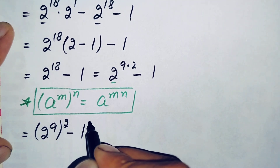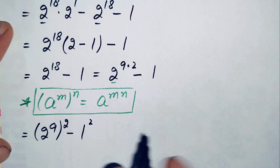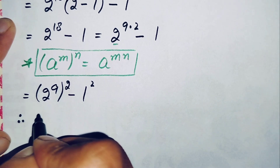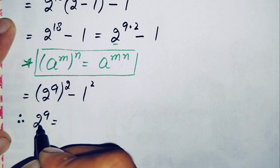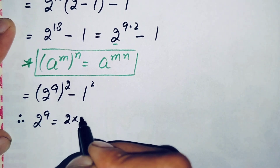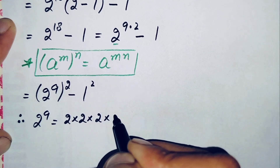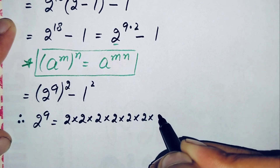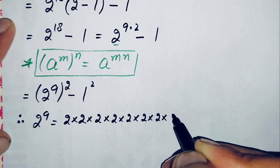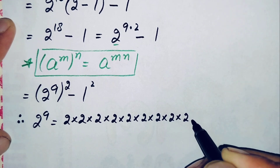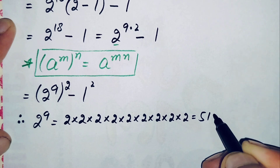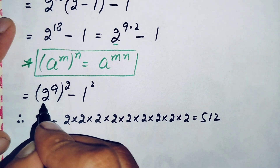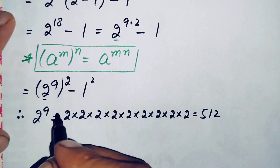We can write the 1 as 1 squared, since 1 squared is simply 1. Now we find the value of 2 raised to power 9: multiplying 2 nine times — 2 times 2 is 4, times 2 is 8, times 2 is 16, times 2 is 32, times 2 is 64, times 2 is 128, times 2 is 256, times 2 is 512. So the value of 2 raised to power 9 is 512.